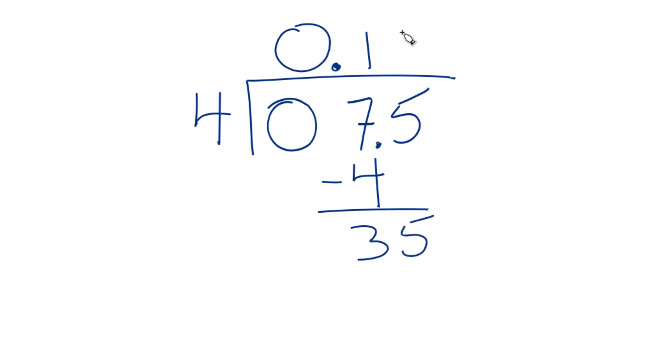4 times 9 is 36. So 4 times 8, that's 32. We subtract, we get 3.